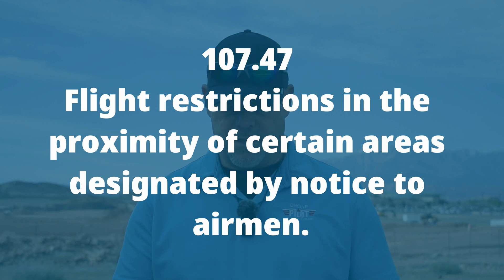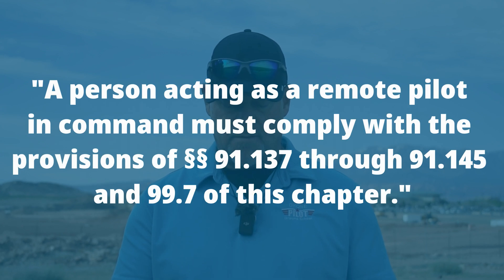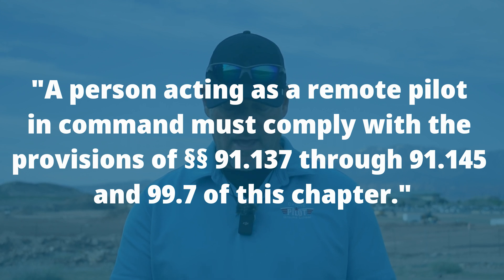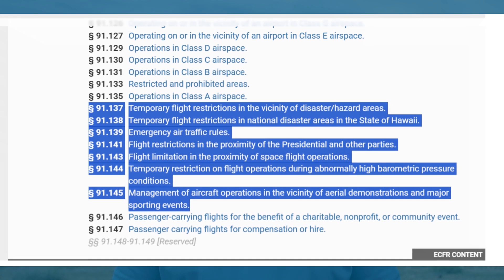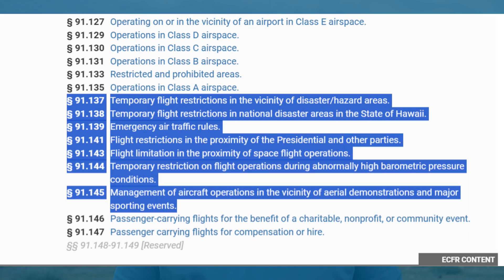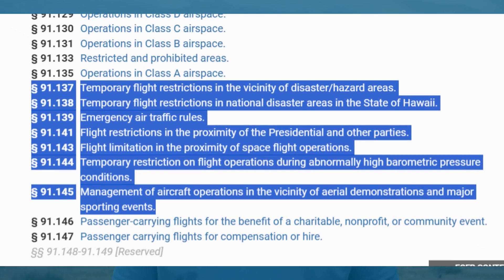What do TFRs have to do with flying your drone? Part 107.47, titled 'Flight Restrictions in the Proximity of Certain Areas Designated by Notice to Airmen,' states that a person acting as a remote pilot in command must comply with the provisions of Parts 91.137 through 91.145 and 99.7. These regulations outline flight restrictions for all aircraft including drones, covering things like restrictions near disasters or hazards, emergency air traffic rules, presidential travel, space flight operations, aerial demonstrations, and certain sporting events. These regulations give the FAA authorization to issue TFRs for these situations.